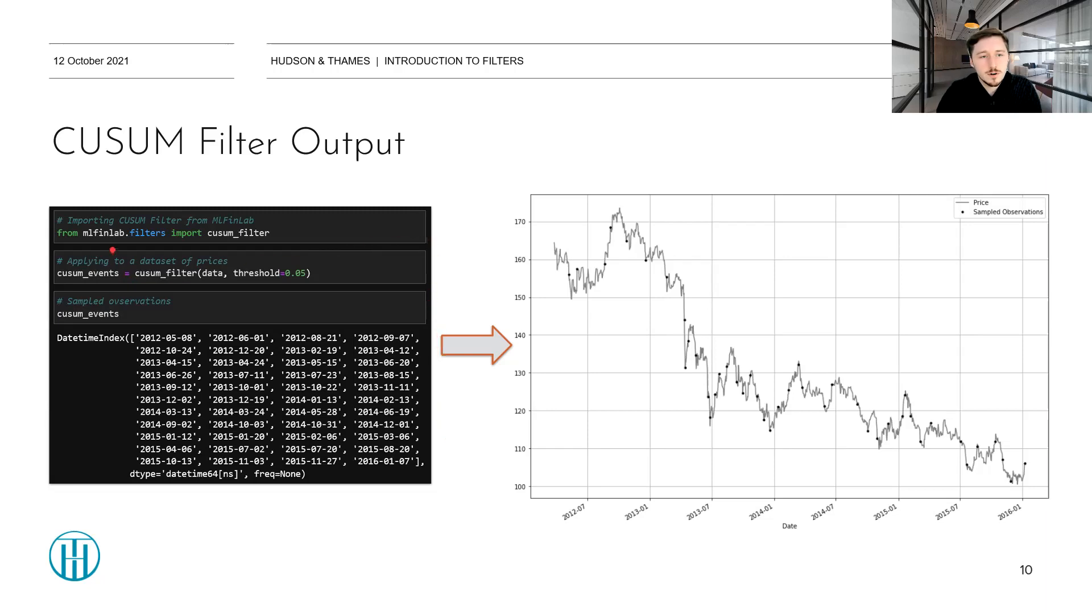Here is how the cumulative sum filter can be used from the MLFinLab package. First, one would import it from the filters module of the package. Then, for example, we can apply it to a dataset. In this case, this is a price series for the GLD ETF from 2012 till 2016. With a threshold of 0.05, we'll get a set of CUSUM events. In this case, a datetime index that can be plotted alongside with the original price series. And as you can see, the event will be recorded only when an underlying series will travel a set threshold H.